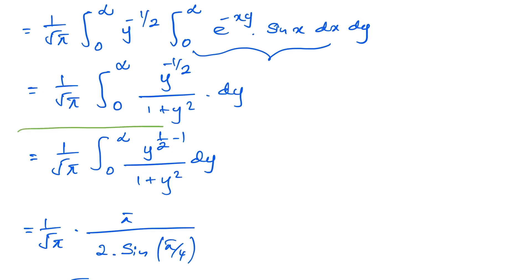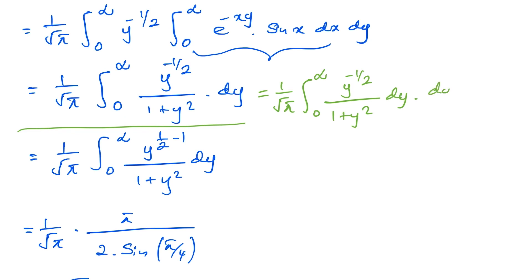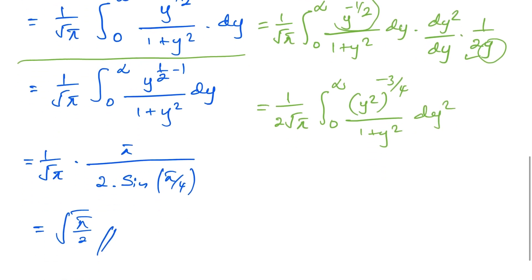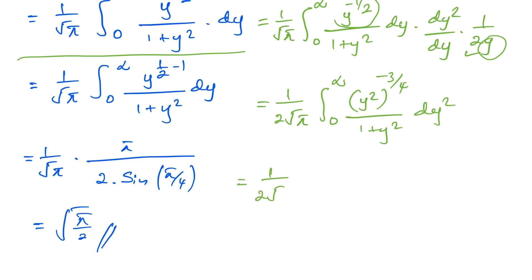For the third method, we begin with 1 over square root of π times the integral from 0 to infinity of y^(−1/2) over (1 + y²) dy. We multiply by dy² over dy and by 1 over 2y, giving 1 over (2 square root of π) times the integral from 0 to infinity of (y²)^(−3/4) over (1 + y²) d(y²). This is just a Beta function: Beta(1/4, 3/4).